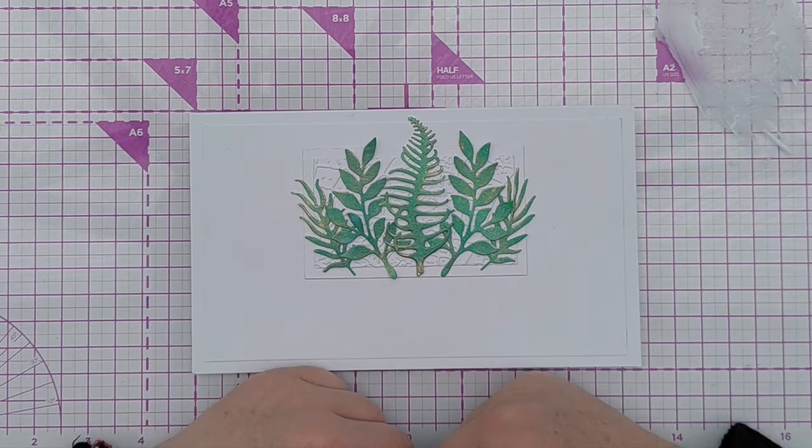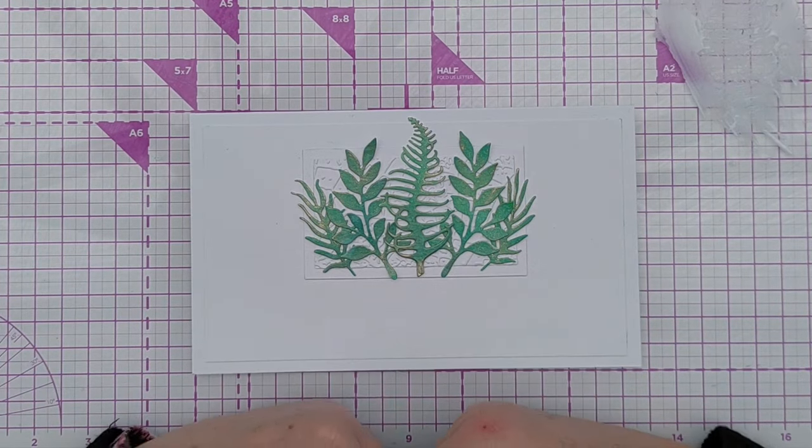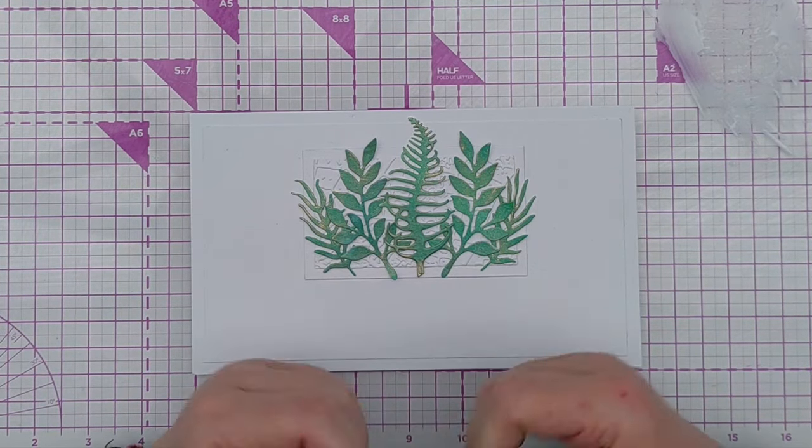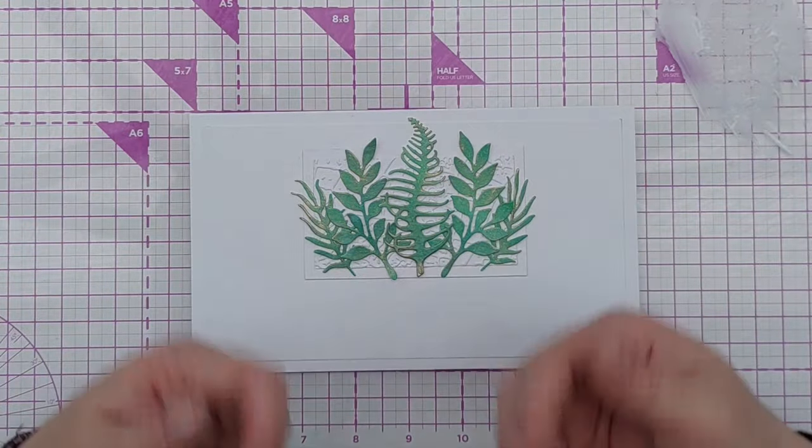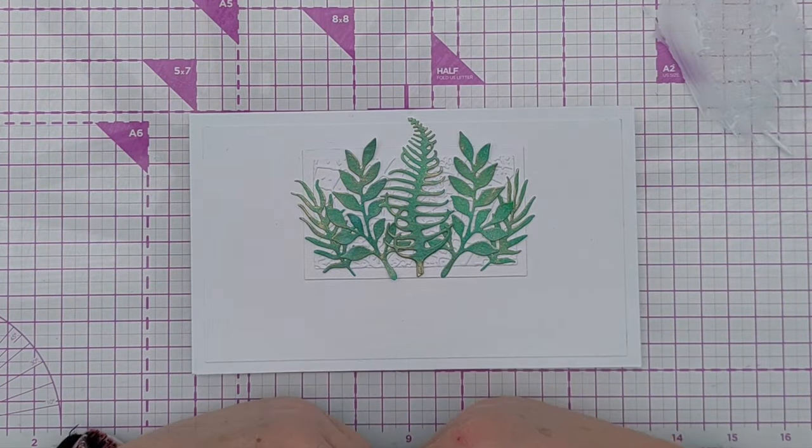If you wanted a bit more in the background or if you didn't have the right embossing folder to create some texture you could die cut from vellum and stick those behind and that would give you a little bit of extra texture there.